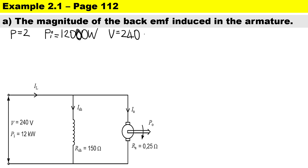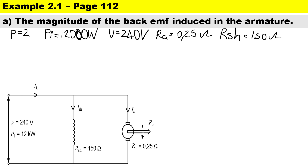The armature resistance R_a is 0.25 ohms — the smaller resistance — and the shunt resistance R_shunt is 150 ohms — the larger resistance. This machine is lap wound, so the number of parallel paths is equal to 2 times the number of pole pairs: 2 × 2 = 4. The machine operates at a speed of 1000 revs per minute.